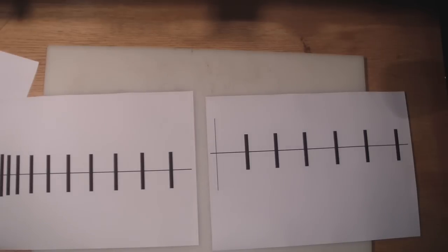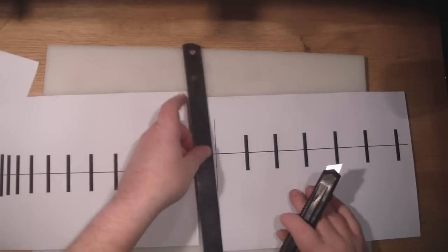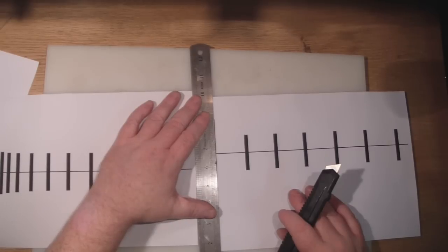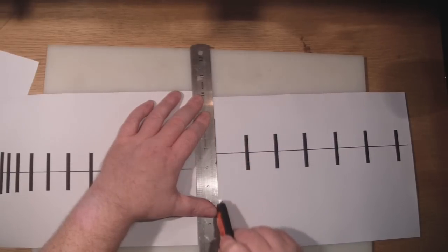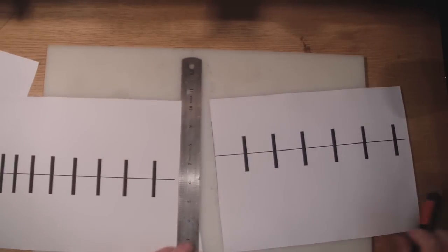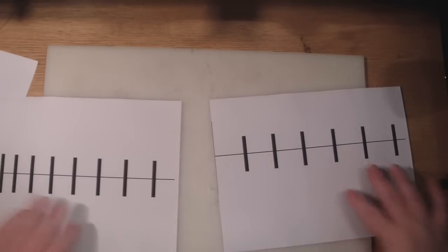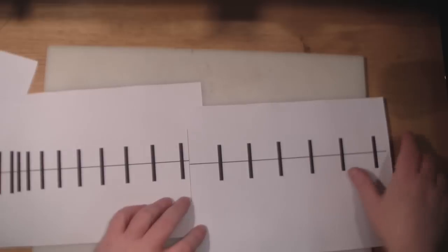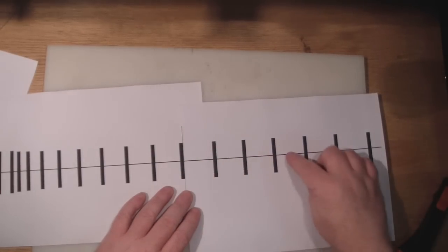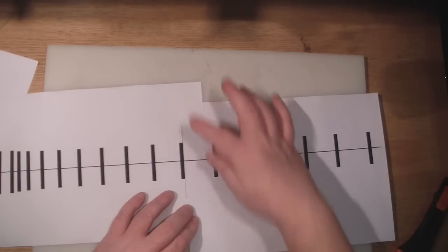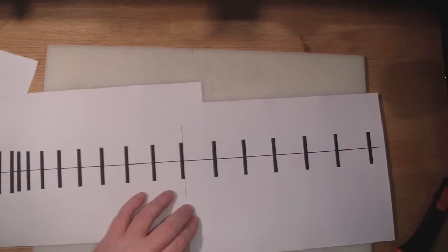So you want to print off your templates and stick them together. I've got this black line here as a guide and I'm just going to trim it with a knife, and then this line here butt up against that element there. Make sure that you've got it nice and straight and then stick it down.